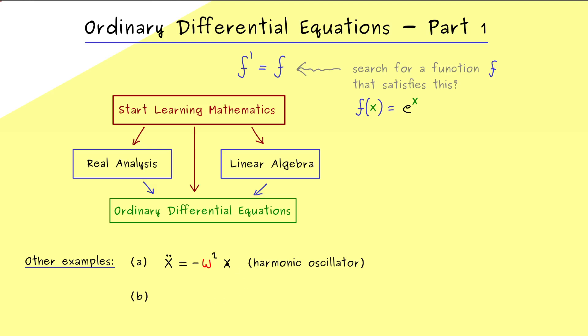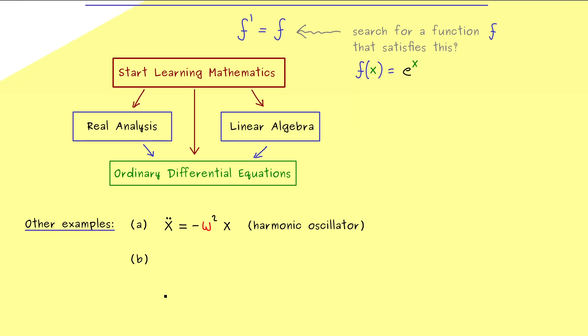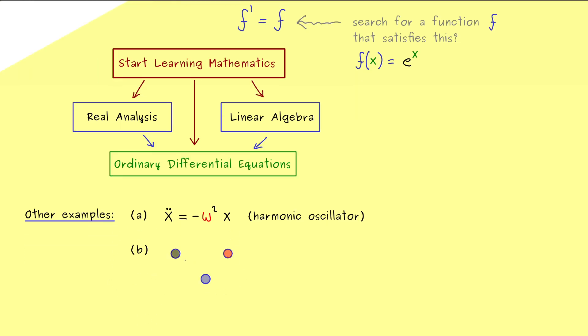Ok, so now we can consider another example also given by physics. Indeed this one is easy to explain. You just have three planets here and they will interact with gravity. So simply said they will attract each other.